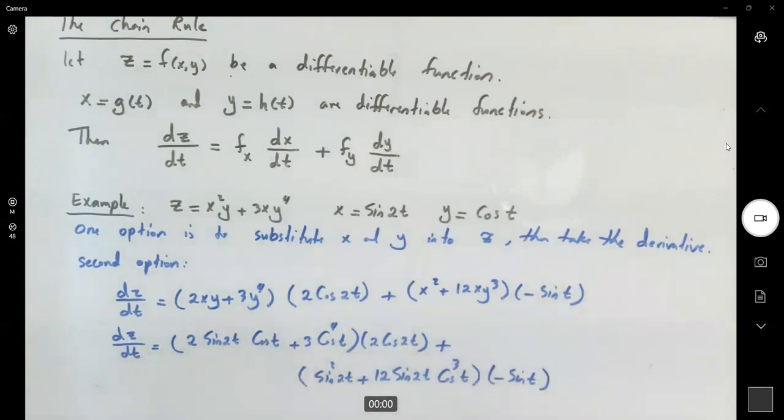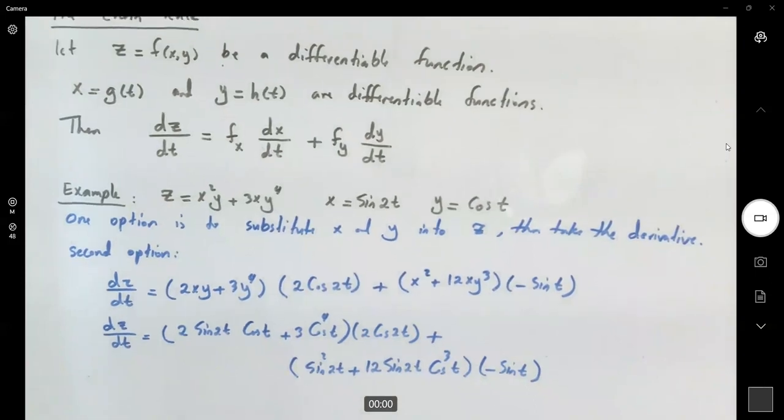Finally, you can simplify the whole thing and write it in a nicer format. You can distribute 2cos(2t) into parentheses, negative sin(t) into parentheses, and if you have like terms, you can combine them. Simplify if necessary.